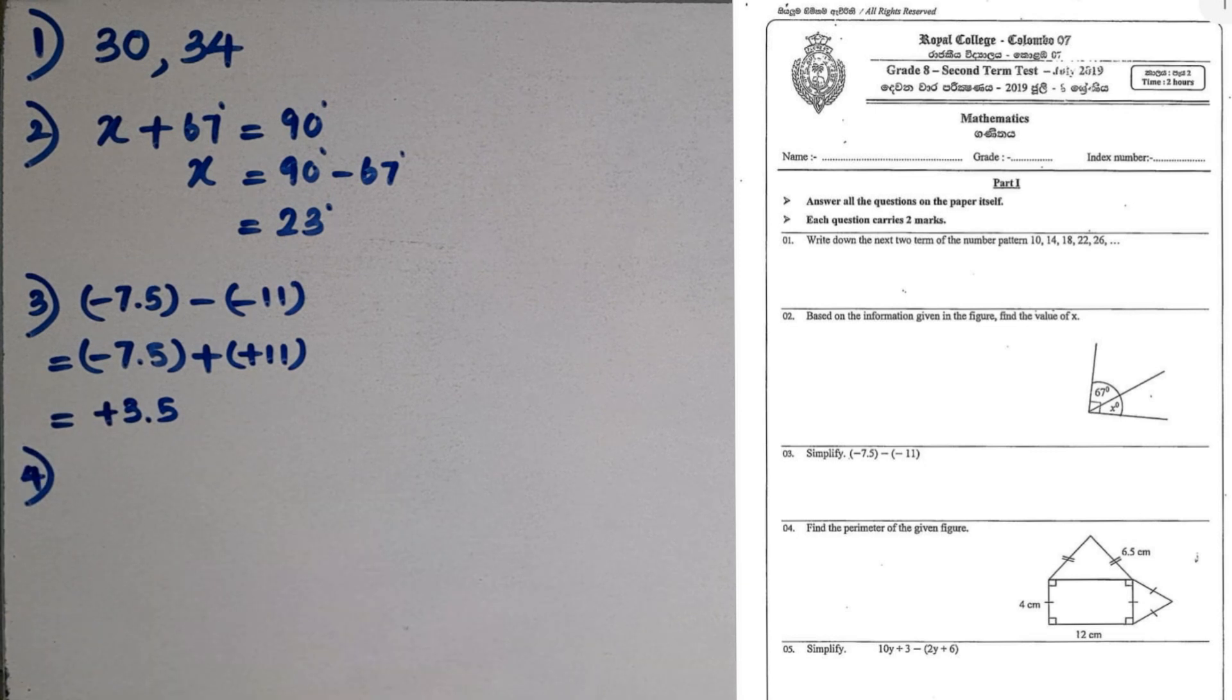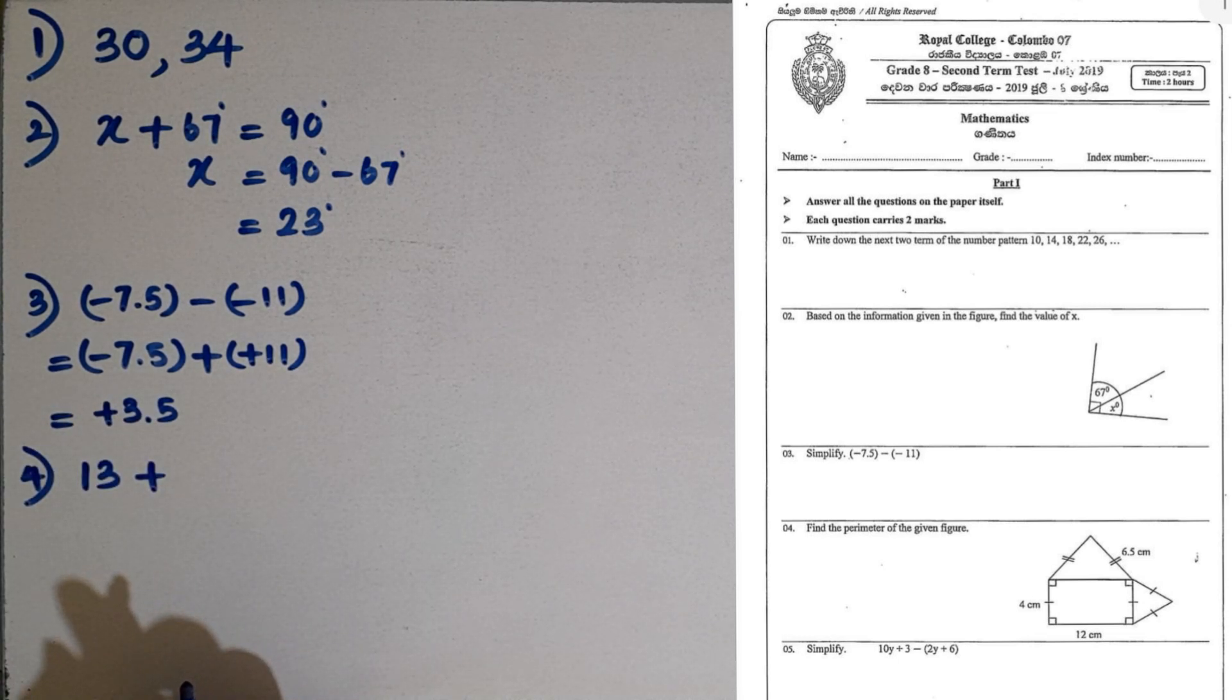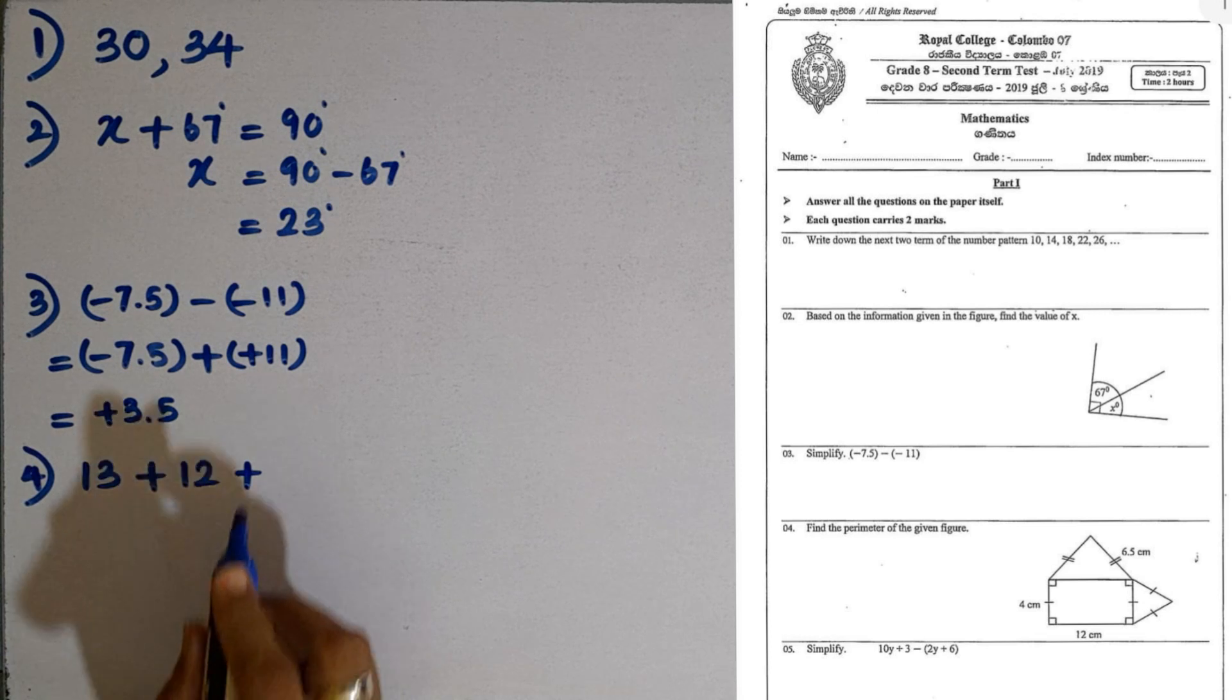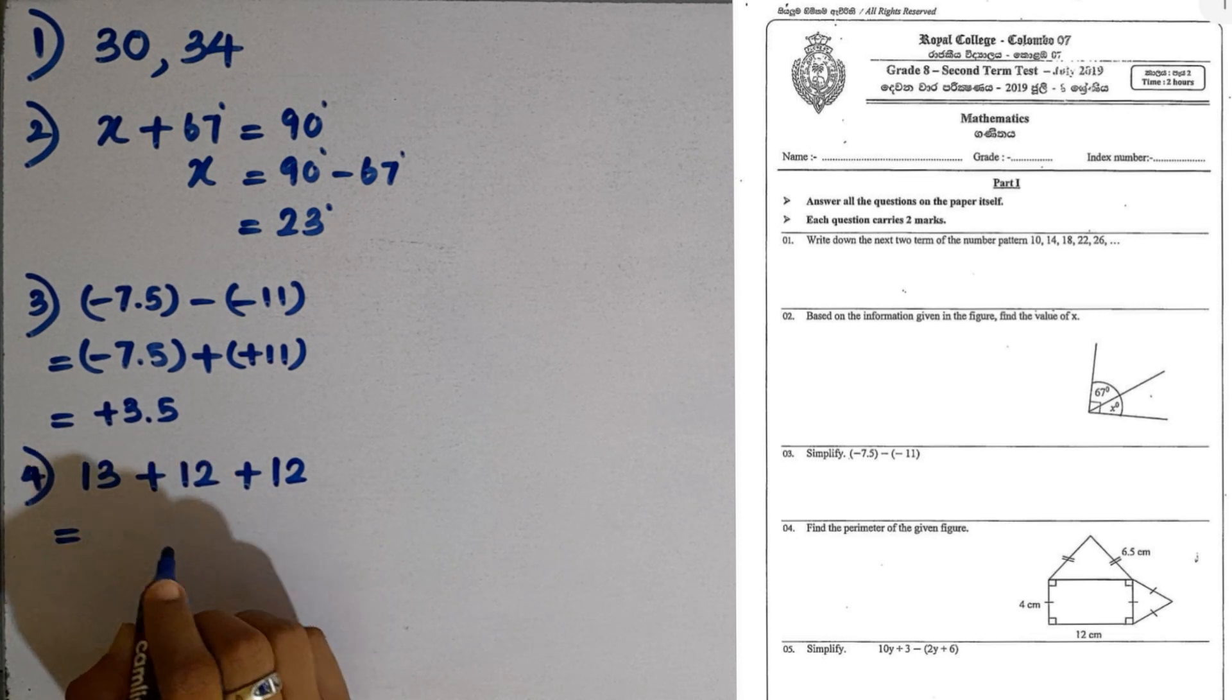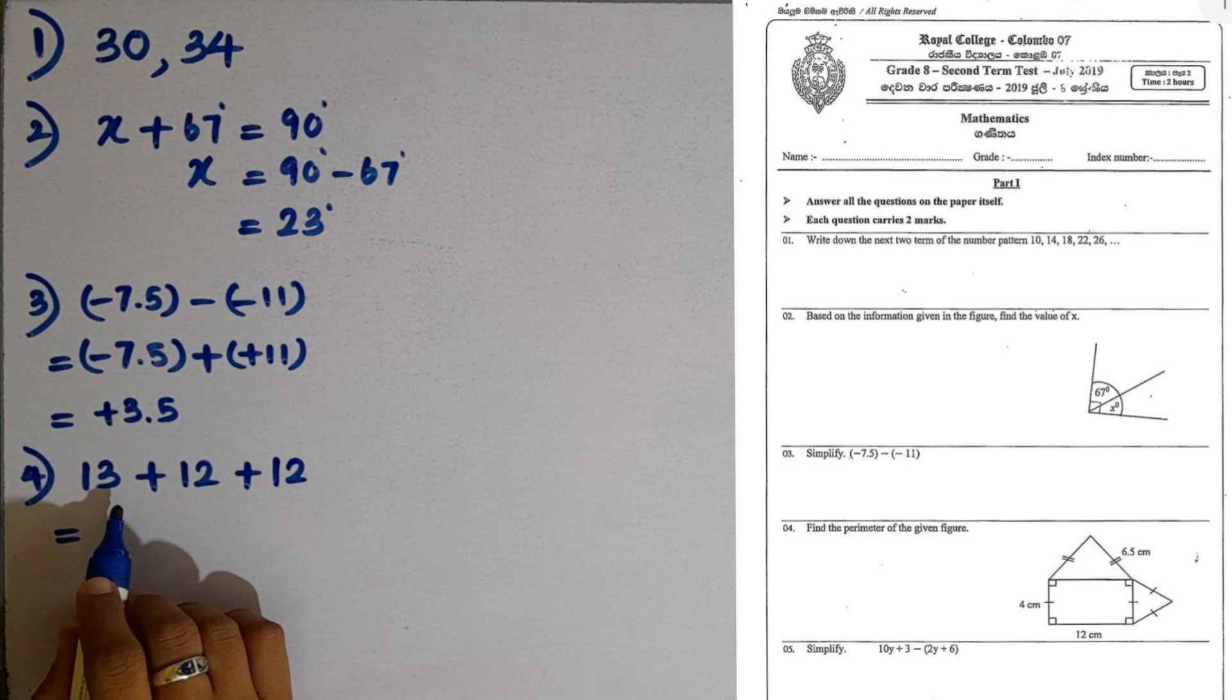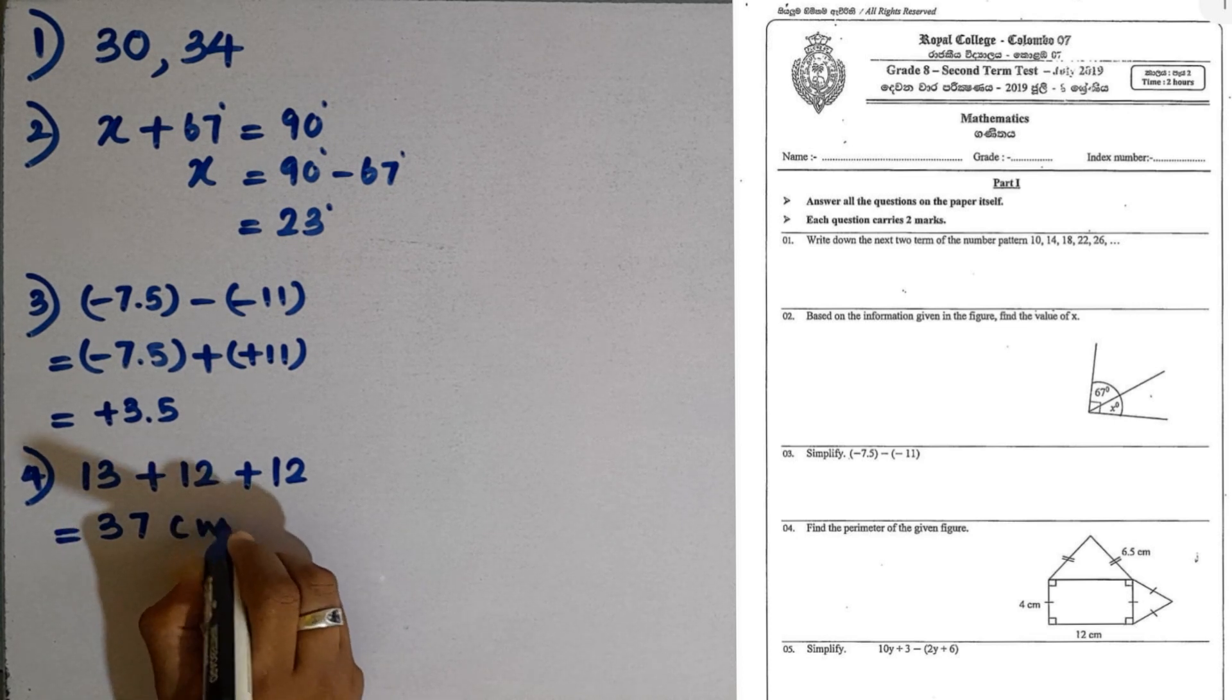Question number 4. Find the perimeter of the given figure. When finding the perimeter, we have to add the surrounding lengths of the figure. There are 2 sides of 6.5, so 6.5 multiplied by 2 is 13. Then there are three 4's, so 4 times 3 is 12. Plus two more sides of 12, which is the length of the rectangle. The answer is 12 plus 12 is 24, 24 plus 13 is 37 centimeters.